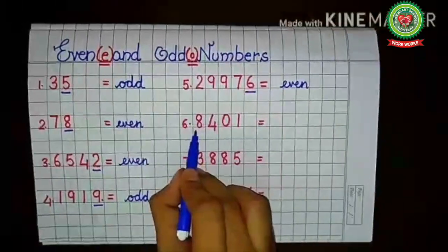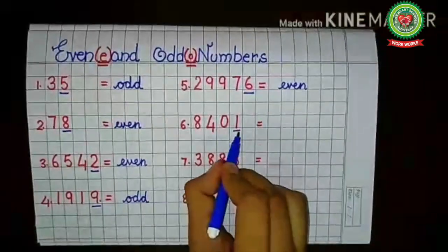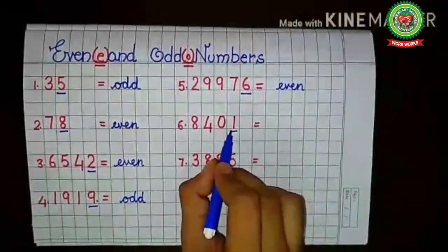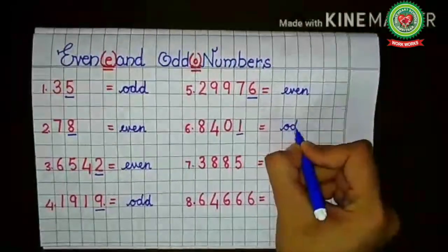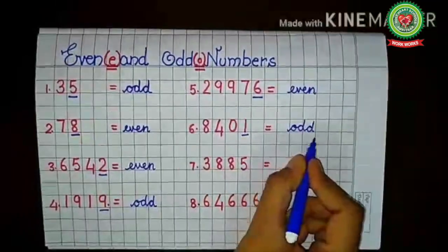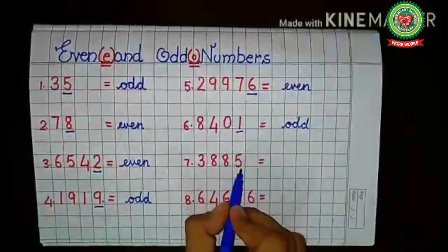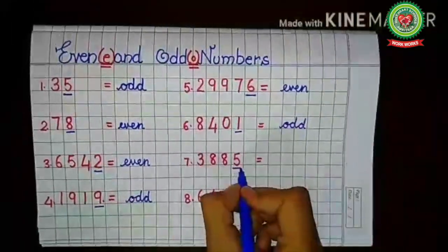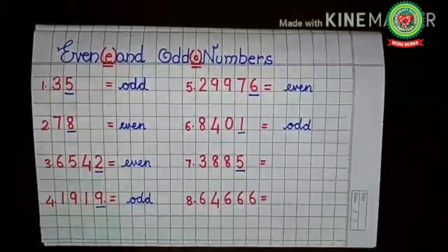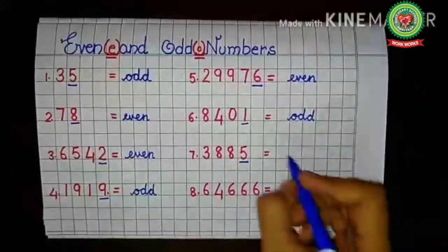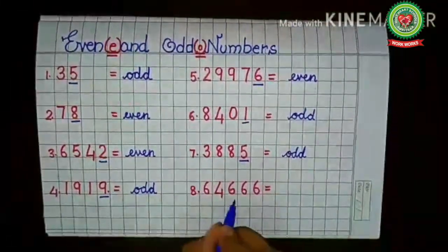Next is 8401 — eight thousand four hundred one. The last digit is one. One does not come in the table of two, so 8401 is an odd number. Next is 3885 — three thousand eight hundred eighty-five. The last digit is five, which does not come in the table of two, so this is also an odd number.